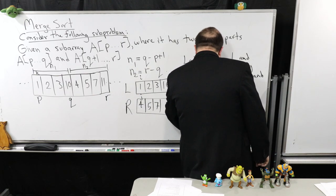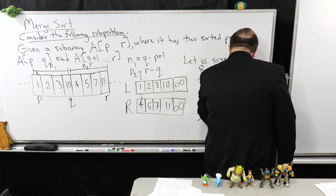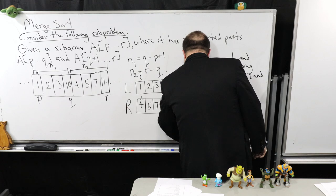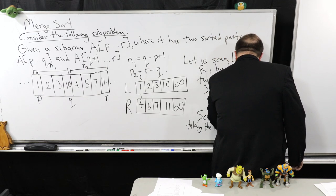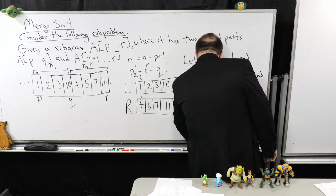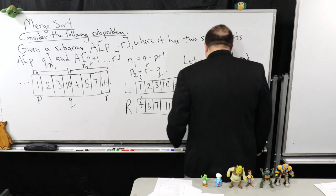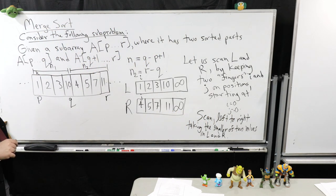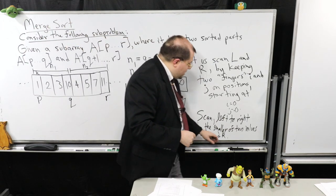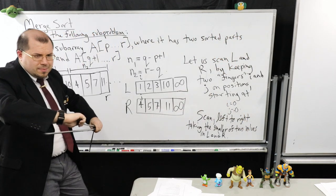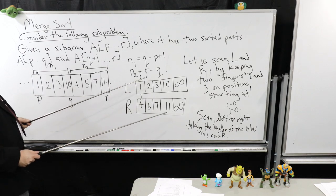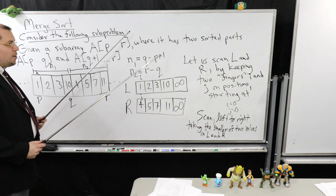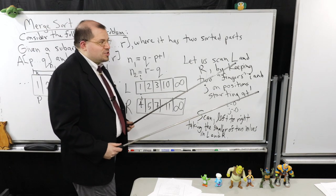I'm going to scan left to right, taking the smaller of the two values in L and R. I have my two fingers, I and J. Believe it or not, you already know how to sort two partially sorted arrays — each one of these is sorted. So this is how the process I'm going to refer to as merge works. It's quite simple.